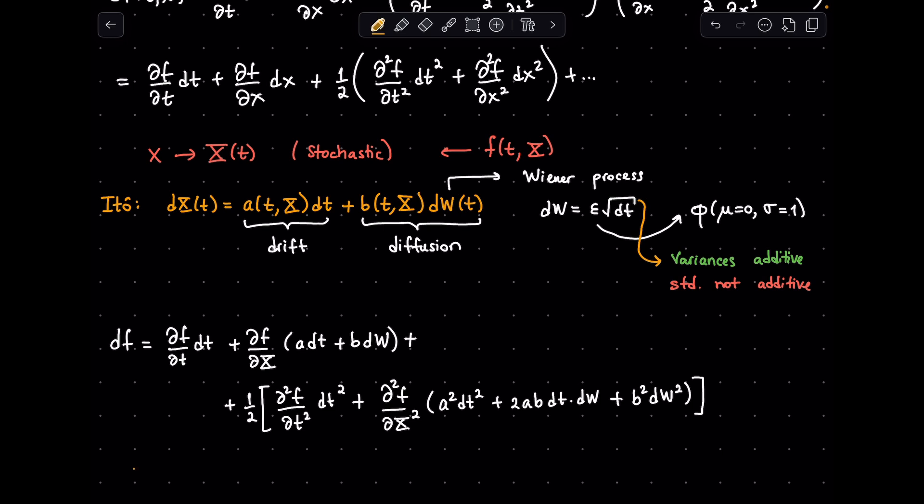Next, we want to derive the result when dt goes to 0. In that case, terms such as dt squared can be ignored. dt times dw is also going to disappear, as dw is proportional to square root of dt, overall giving dt to the power of 3 over 2.